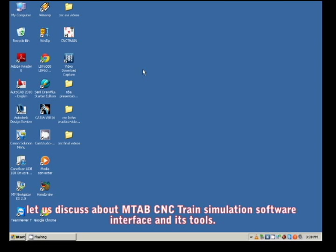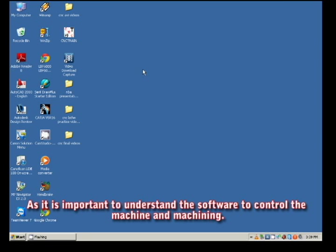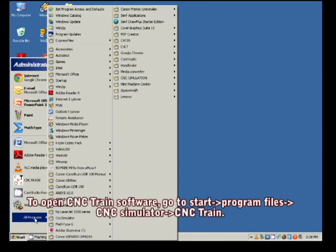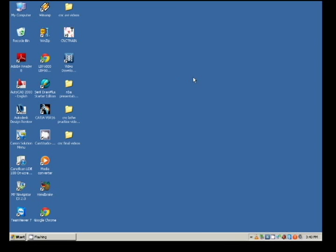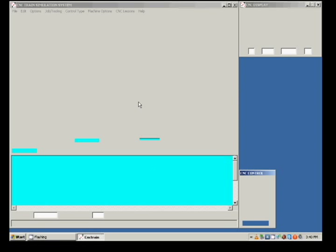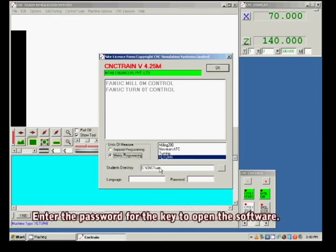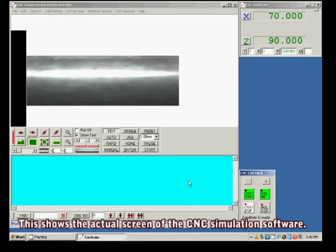Now let us discuss the MTAP CNC train simulation software interface and its tools, as it is very important to understand the software to control the machine and its machining. To open the CNC train software, go to start, program files, CNC simulator, and CNC train. Enter the password for the key to open the software.